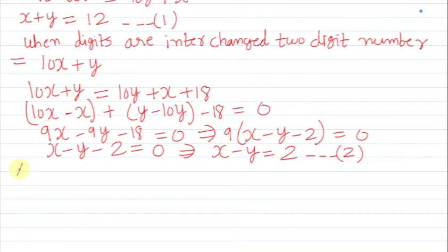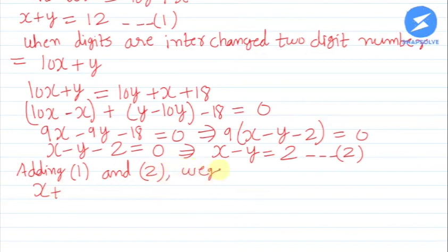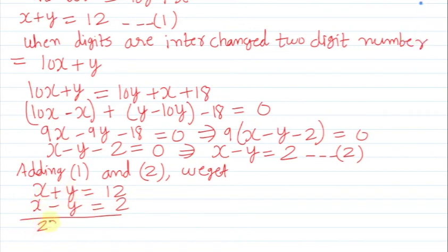Adding equations 1 and 2: x plus y equals 12 and x minus y equals 2. Adding them gives 2x equals 14, so x equals 14 by 2, which is 7.